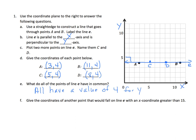Now finally, 1f, give the coordinates of another point that would fall on line E with an x-coordinate greater than 15. Well, it really doesn't matter. As long as my value for my y is 4, I can name anything. And any value greater than 15, I could just do 16. I could do 20.